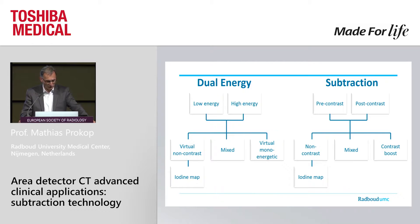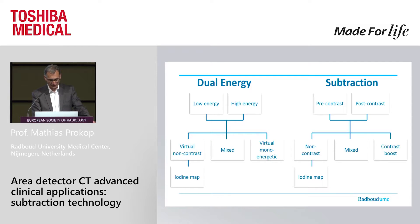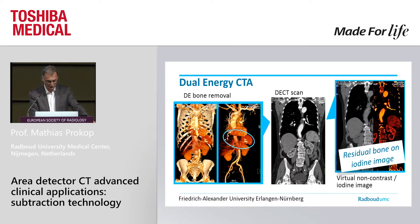You have, of course, a non-contrast image already. You can create an iodine map by subtracting the pre-contrast from the post-contrast. You can mix both images, and you can create a contrast boost.